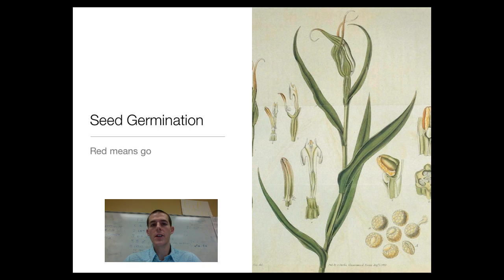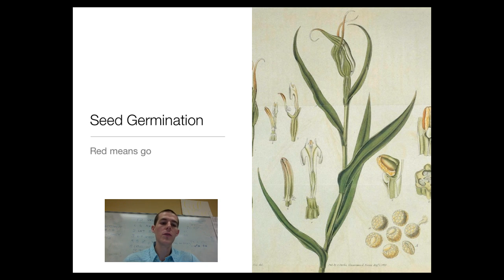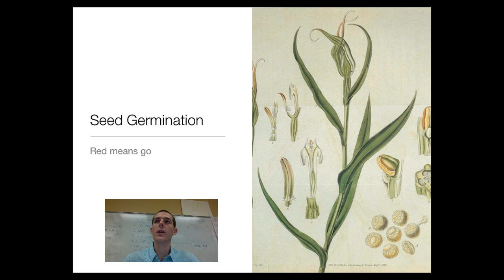The first response is seed germination. Scientists have found that seeds will not germinate unless they have been exposed to red light. You can soak a seed in water all day and get it ready to go, but for some seeds that's not enough — once the seed has been hit with red light, it will go ahead and germinate and start growing.